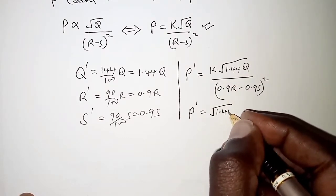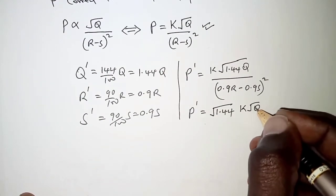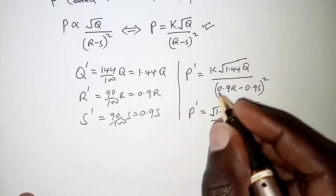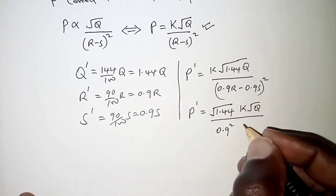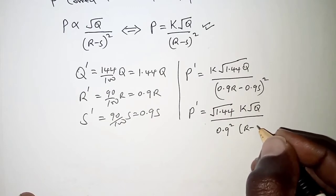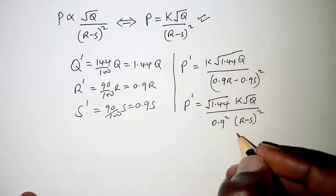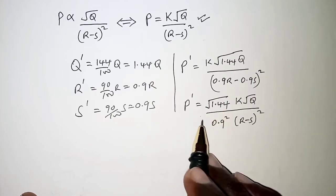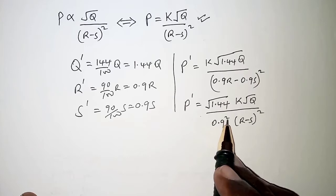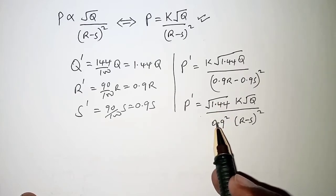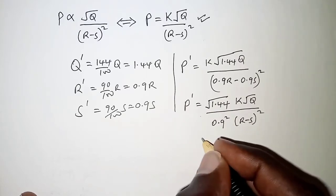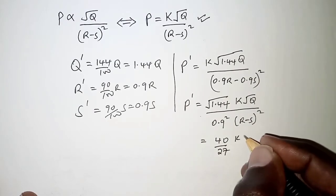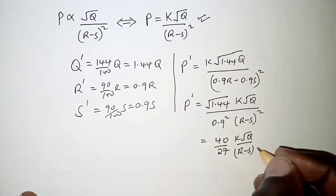So this in a simpler form will be, we factor out the square root of 1.44 times K root Q, and this will be divided by 0.9 squared. So we factor it out and square, so that will be 0.9 squared, which gives us 40 over 27 K root Q over R minus S squared.